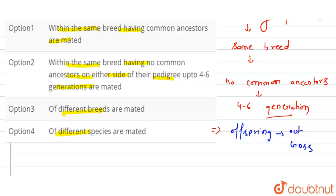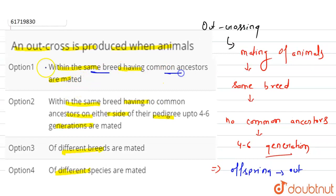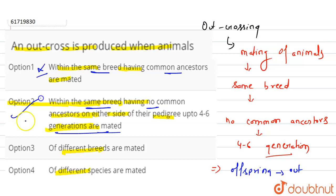So the first option — within the same breed having a common ancestor — is incorrect because outcross does not involve a common ancestor. The correct answer is the second option: within the same breed having no common ancestor on either side of their pedigree up to 4 to 6 generations are mated.